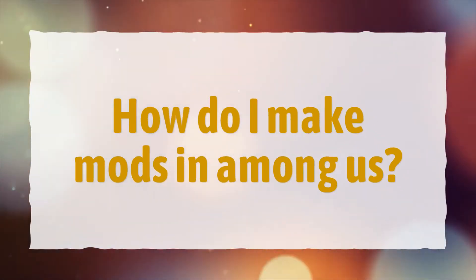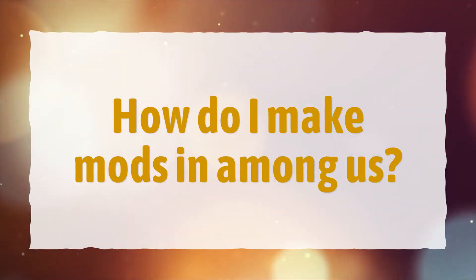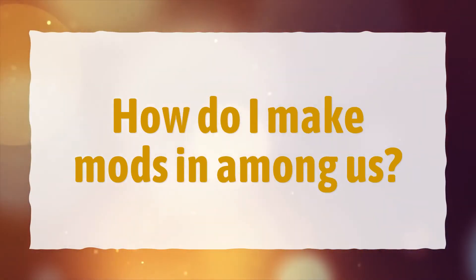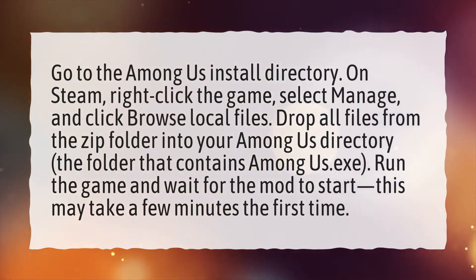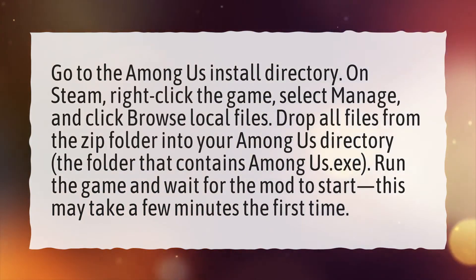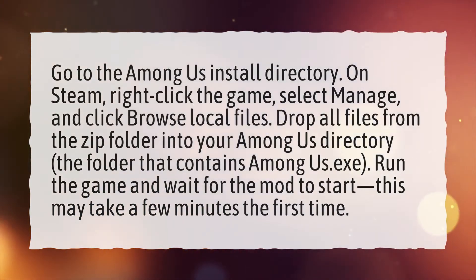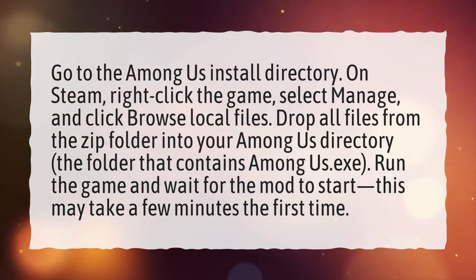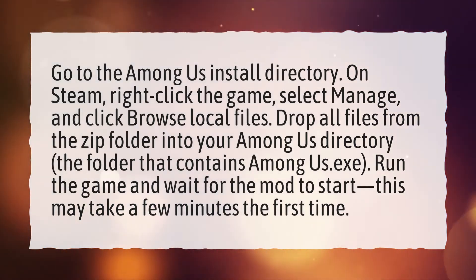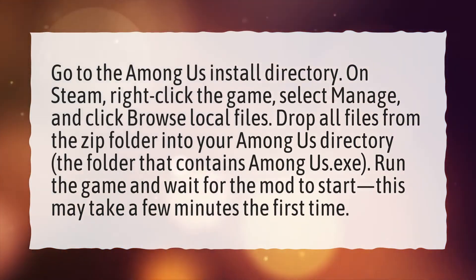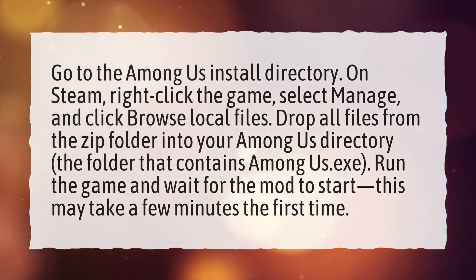How do I make mods in Among Us? Go to the Among Us install directory. On Steam, right-click the game, select Manage, and click Browse Local Files.